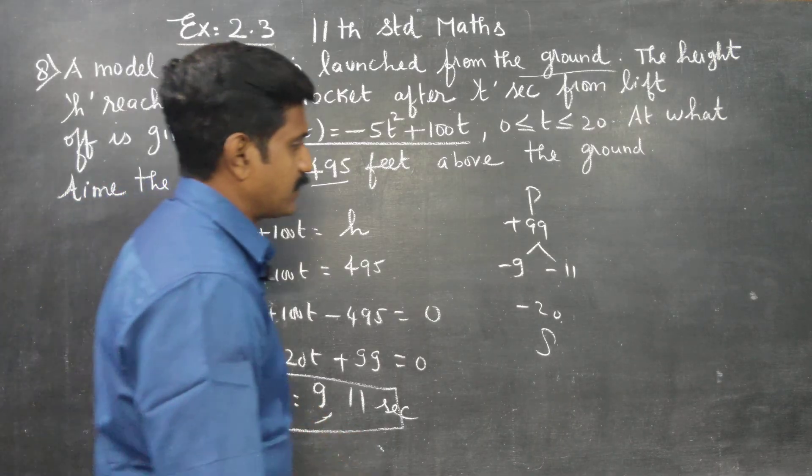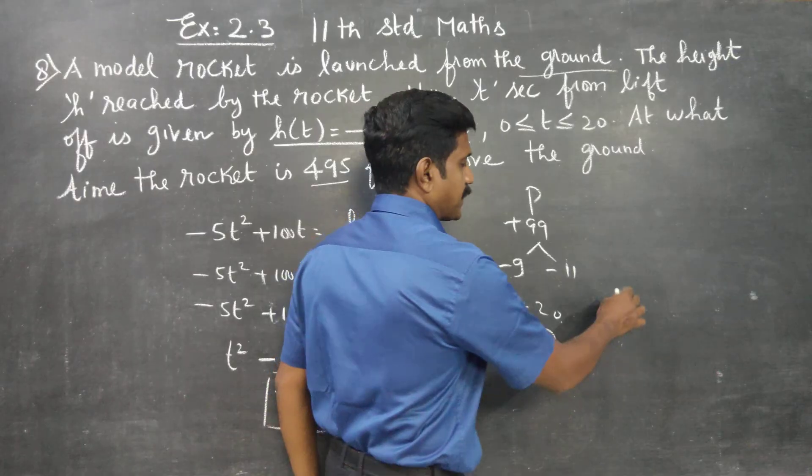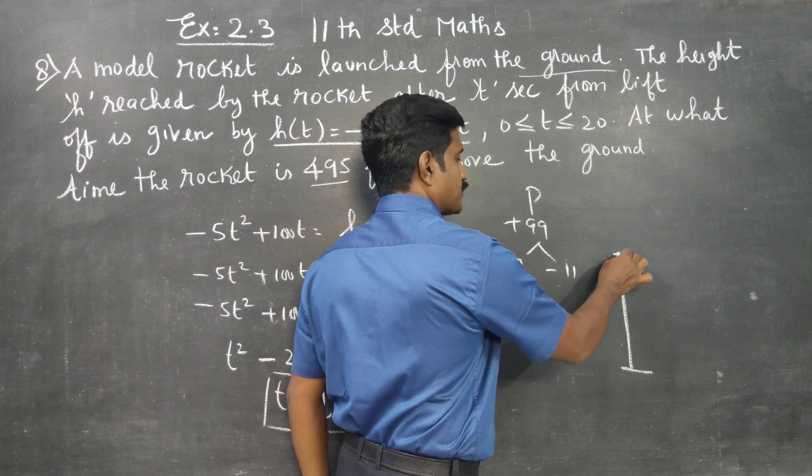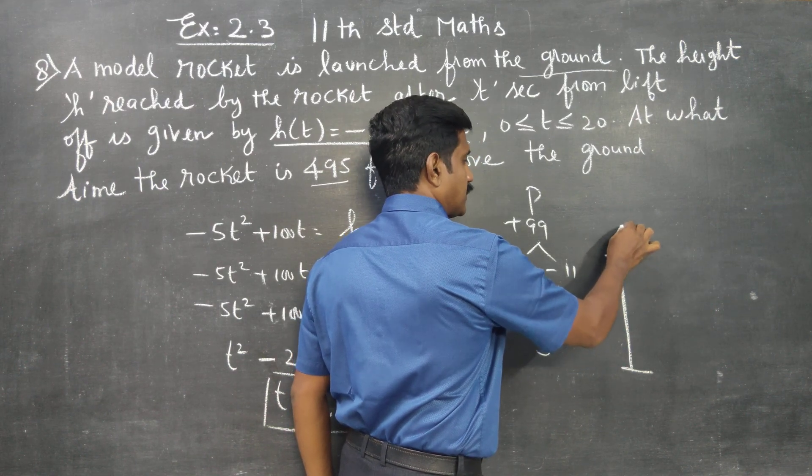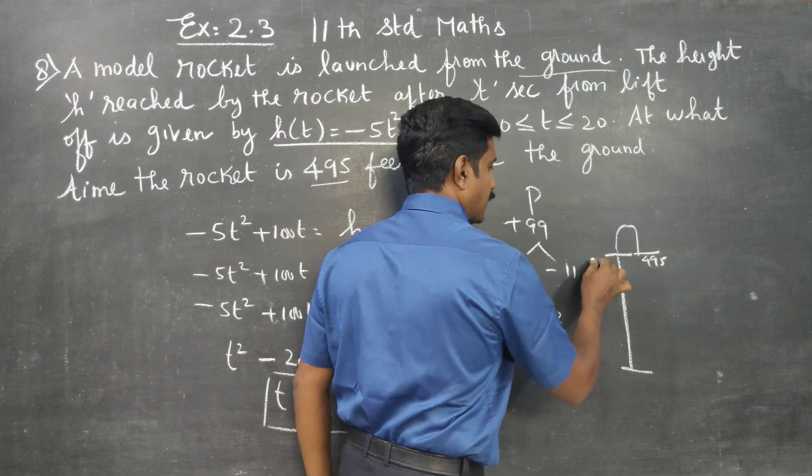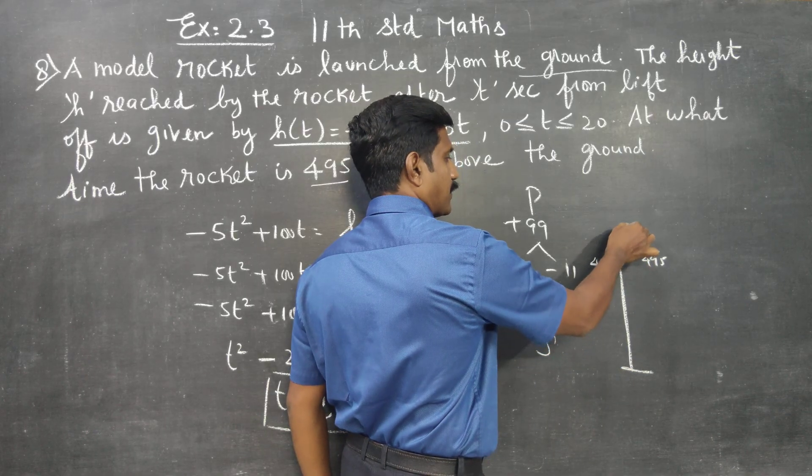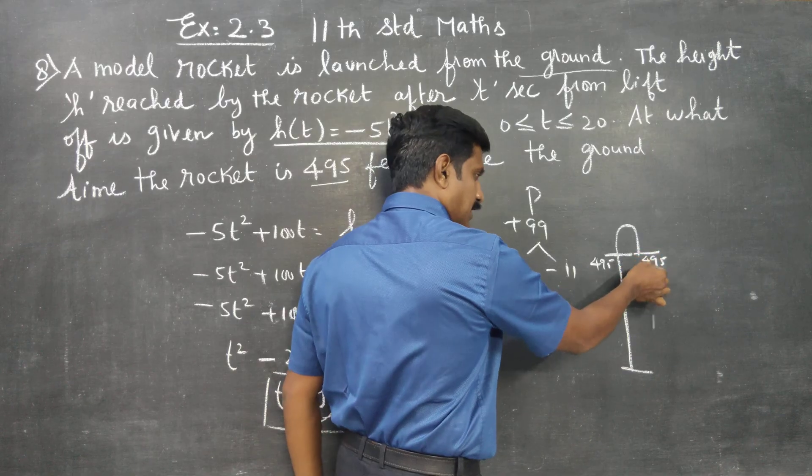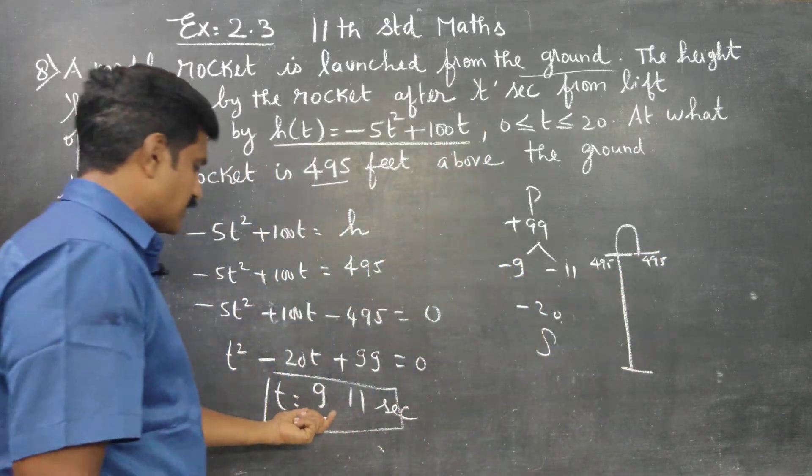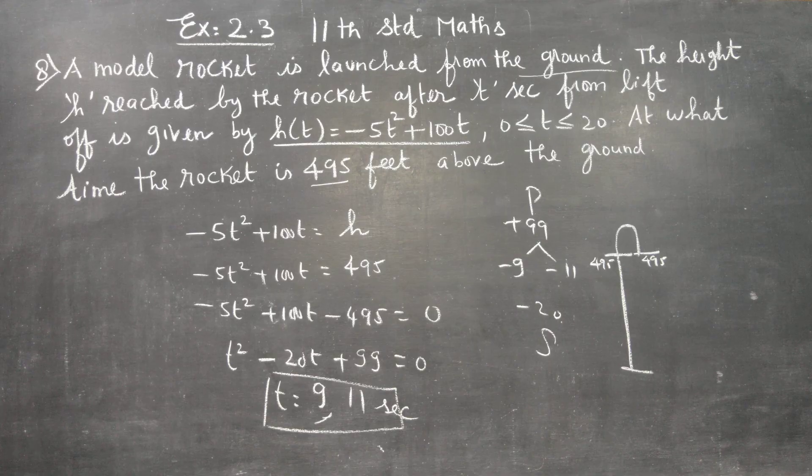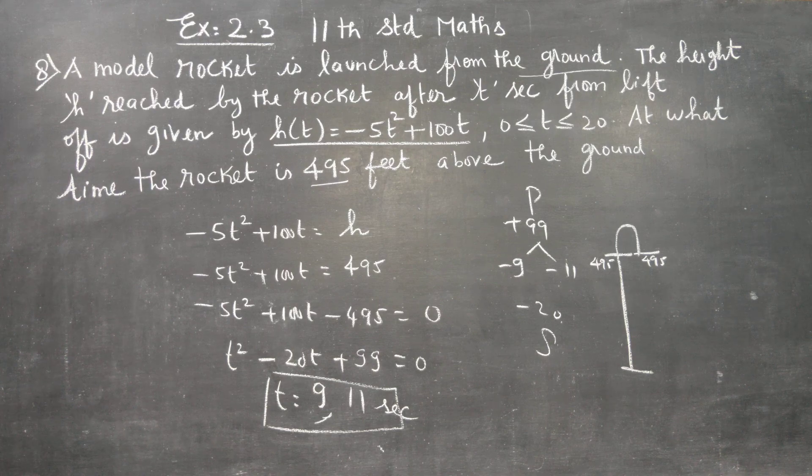The answer is 9 and 11, two answers. The rocket reaches 495 feet at two different times: 9 seconds and 11 seconds. These are the two timings when the rocket is at 495 feet.